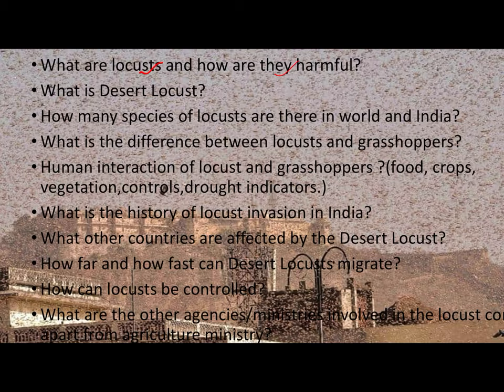Desert locust is a type of grasshopper insect that enters India in the first wave in February and the second wave in April and May. Among the four varieties found in India are: desert locust, migratory locust, and Australian locust. The most important is the desert locust, which originates in dry areas of Africa — especially the Horn of Africa and East Africa — then moves toward India crossing Iran and Pakistan.